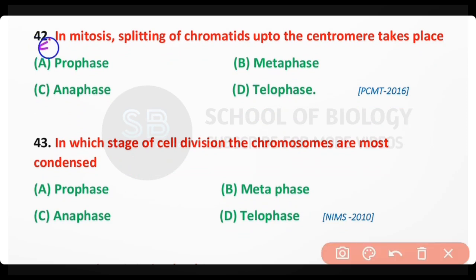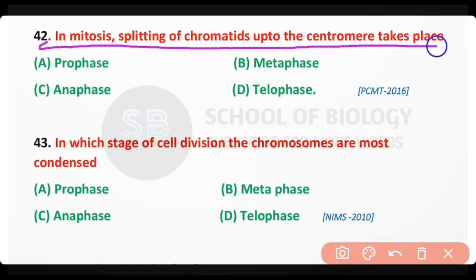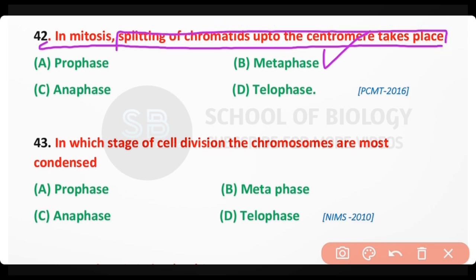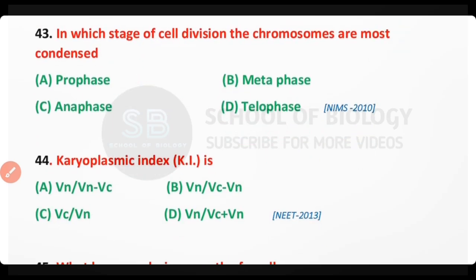Question number 42. In mitosis, the splitting of chromatids up to the centromere takes place at: prophase; metaphase; anaphase; telophase. The correct answer is option B. The splitting of chromatids up to the centromere takes place at late metaphase during mitosis.